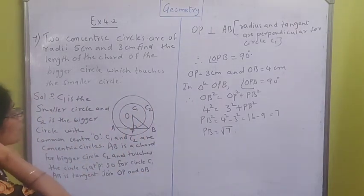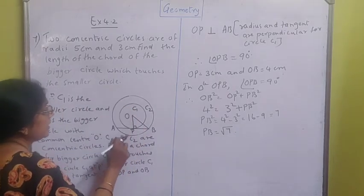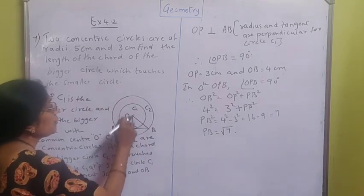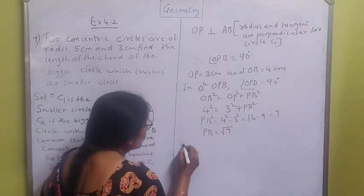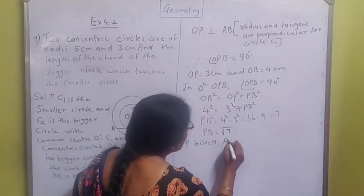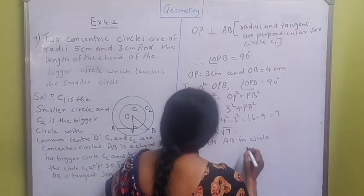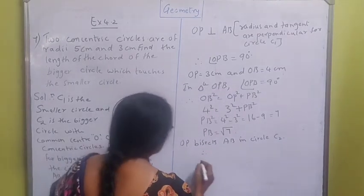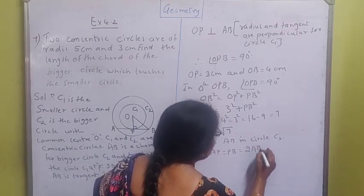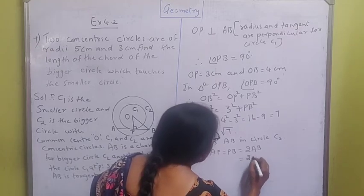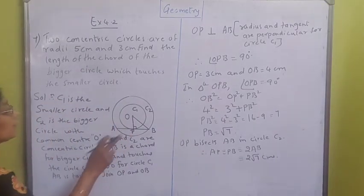So PB you've got it as √7. We know that OP is the radius and AB is the chord. AB is a chord for circle C2 and OP is drawn, so OP bisects AB in circle C2. Therefore AP is equal to PB, and AB is equal to 2√7. That is the length of the chord.